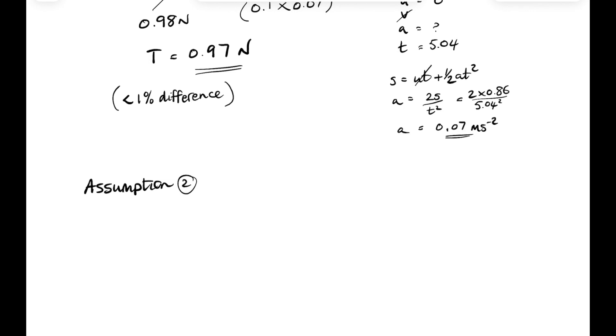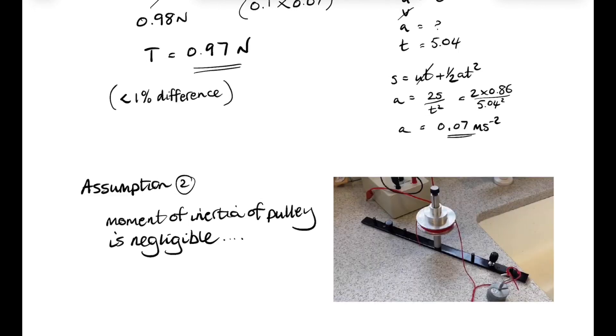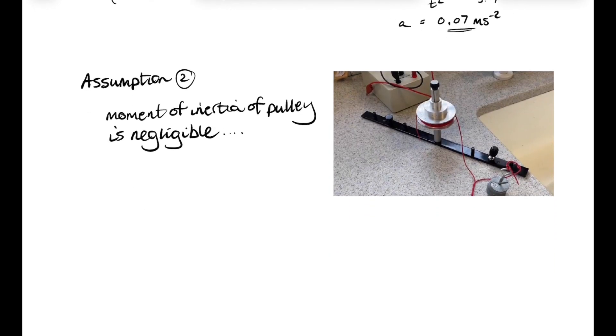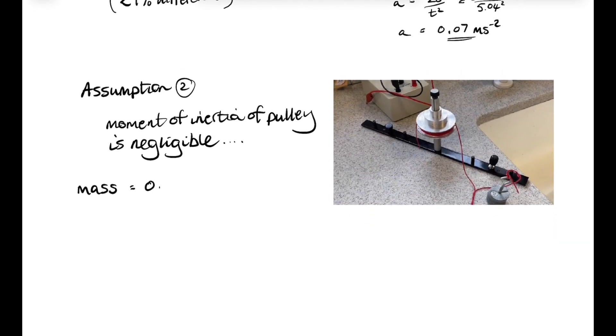Now our second assumption is that the moment of inertia of the pulley and the rod was negligible. And again, we can do a rough calculation to see if that is the case. And the mass of the pulley was 250 grams. And it's got a mean radius of, well, let's use the 0.0275 that we used before. And therefore its moment of inertia, if we consider it to be a disk,